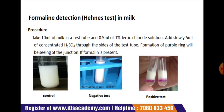Next is the formalin detection test in milk. Take 10 ml of milk in a test tube with 0.5 ml of one percent ferric chloride solution, then slowly add 5 ml of concentrated H2SO4 through the side of the test tube. Formation of a purple ring will be seen at the junction if formalin is present. The diagram shows the positive result having a purple ring between the two layers of milk and acid. The negative test shows no appearance of such ring, comparable with the control.